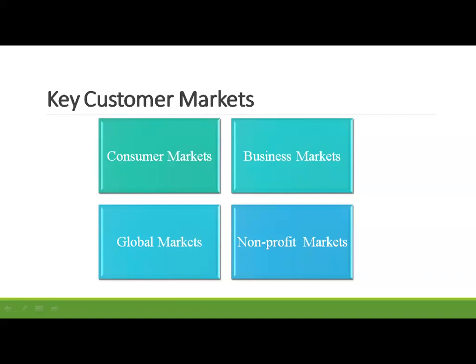The key consumer markets — that is the B2C market — can be divided into four parts: consumer markets, business markets, global markets, and non-profit markets. Starting with consumer markets: companies selling mass consumer goods and services such as juices, cosmetics, FMCG products, athletic shoes, and air travel spend a great deal of time establishing a strong brand image by developing a superior product and packaging, ensuring its availability, and backing it with engaging communications and reliable services.